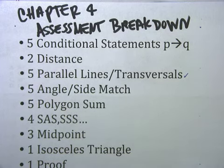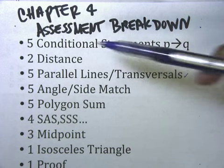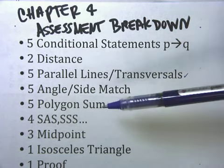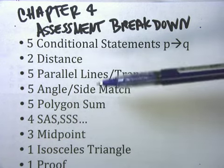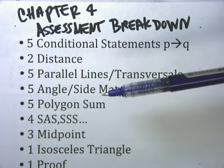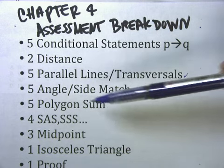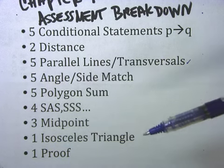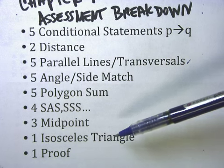So now we're going to look at the Chapter 4 Assessment Breakdown. We see that we had five conditional statement questions — P to Q questions. We had two distance questions. We had five parallel lines and transversal questions. We had five angle-side match questions. Those are questions that match the smallest angle of a triangle with the smallest side, and the biggest angle with the biggest side. We had five polygon sum questions, basically referring to how many degrees are inside a polygon and how many sides a polygon has.